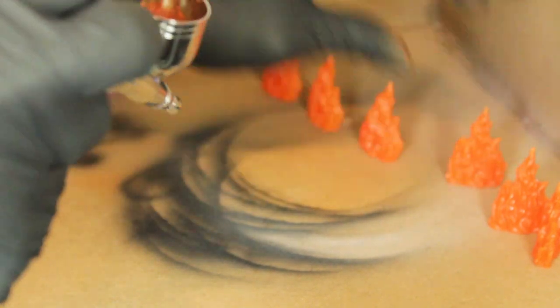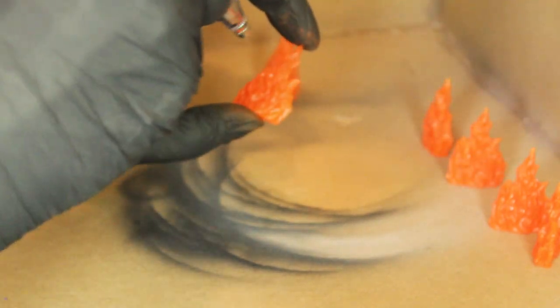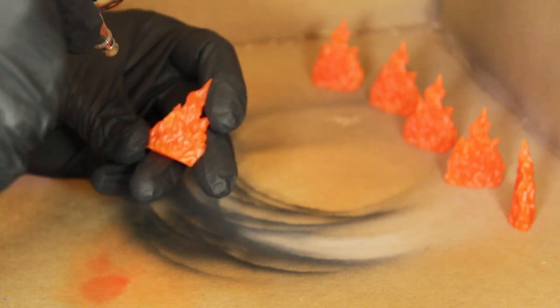So, now I'm going back in with the lava orange, and I'm not hitting as much of the entire miniature. The transition between these two colors is pretty subtle.